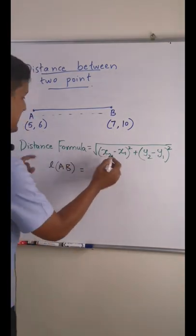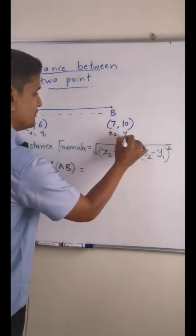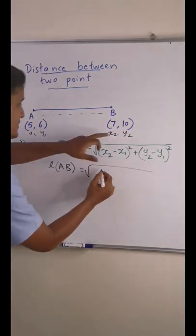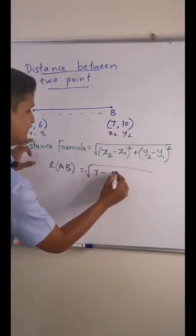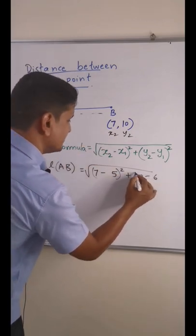Okay, so how will you find? X1, this is your x1, y1. This is your x2, y2. Just replace the value over here. So x2 is what? 7 minus 5, the whole square, plus 10 minus 6, the whole square.